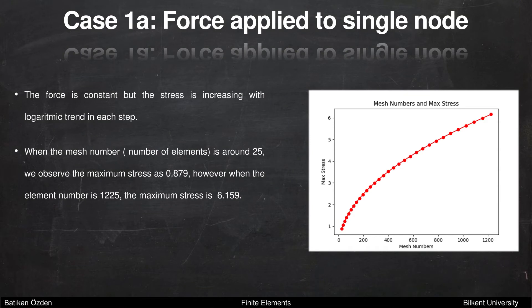When you look at the maximum stress versus mesh numbers — in other words, number of elements plot — you observe a logarithmic trend at each step. When the mesh number is around 25, the maximum stress is 0.8. However, when the element number is 1225, the maximum stress is 6.1.